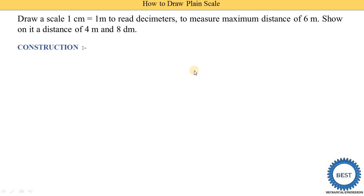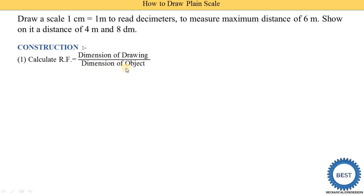First, we find out the representative fraction. RF is equal to dimension of drawing divided by dimension of object. Here, dimension of drawing is 1 centimeter and dimension of object is 1 meter, so it is 1 centimeter divided by 1 meter. Since there are different units, we convert: 1 meter equals 100 centimeters, so we put 100 centimeters in place of 1 meter. Our representative fraction is 1 upon 100.